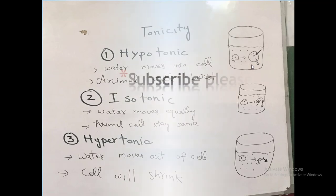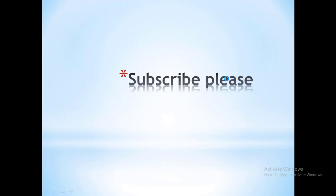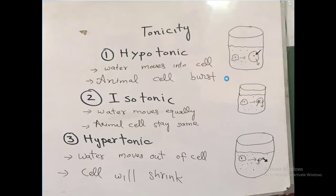The second condition is isotonic. In isotonic, water moves equally — the number of water molecules entering the cell is equal to the number of water molecules leaving the cell, so animal cells stay the same size. As you can see from the diagram, the cell size remains the same.